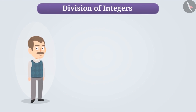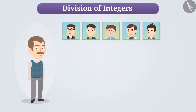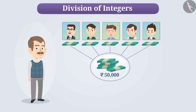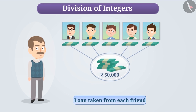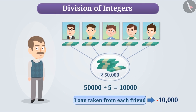A farmer named Rajesh took a loan of Rs. 50,000 from his five friends for his daughter's wedding. If he has borrowed the same amount from each of his friends, then the loan taken from each friend can be found by dividing Rs. 50,000 by five. On solving this, we get to know that the loan taken from each friend is Rs. 10,000, which we represent as minus 10,000. In today's video, let us learn the division of integers in a fun way.